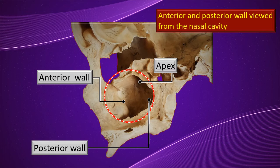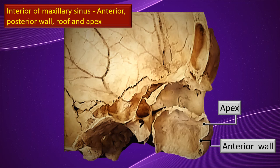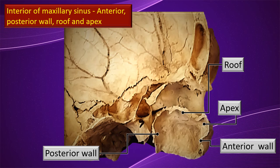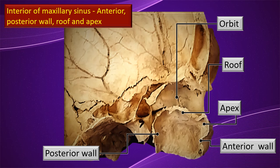In another specimen where the entire lateral wall of the nasal cavity is missing, we get a very comfortable interior view of the maxillary sinus. The apex is visible at the upper lateral end, the anterior wall in front, the posterior wall behind, the roof above, and above the roof is the orbital cavity. Many features are beautifully seen in an otherwise condemned piece of skull.